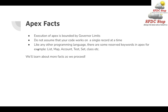The third fact is: like any programming language, there are some reserved keywords in Apex as well — for example, list, map, account, test, set, class, etc. Each keyword has its own usage, and we'll learn more about these in future tutorials.